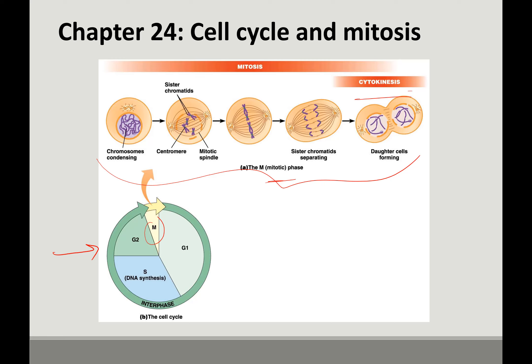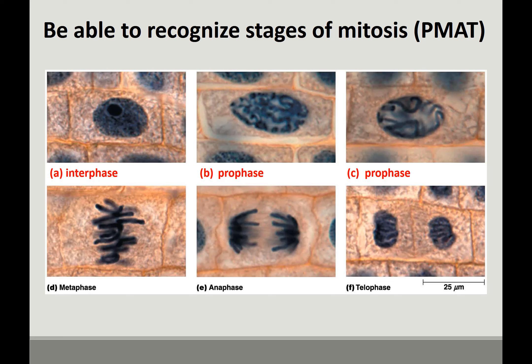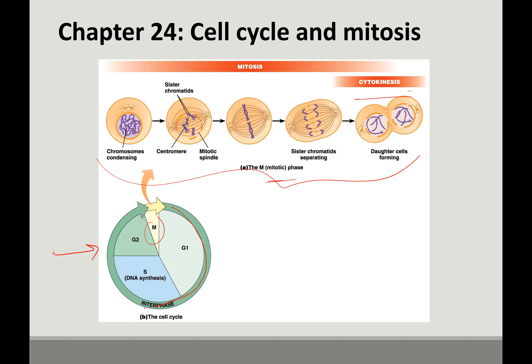I expect you to be able to recognize different stages of mitosis. I focus on PMAT: prophase, metaphase, anaphase, telophase. For my definitions, if you cannot clearly see the chromosomes, the cell is in interphase — meaning it's somewhere in G1, S, or G2 — and we can't tell which.